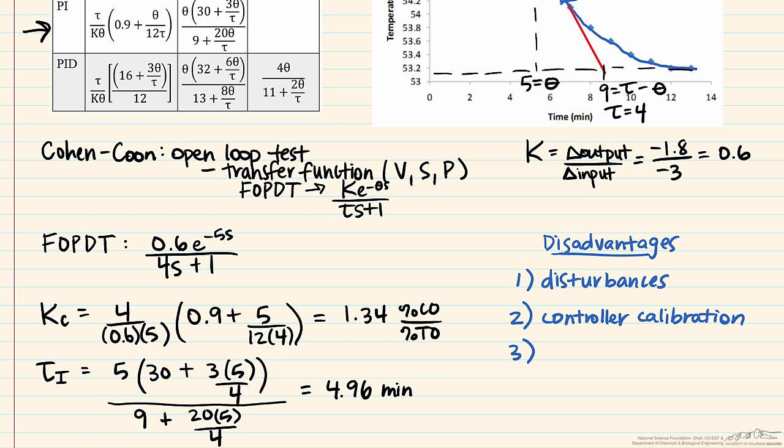Another potential issue is the fact that if any of these things are significantly non-linear, and somewhat related is the fact that if the process doesn't represent a first order plus dead time. So if any of these issues happen that can influence the accuracy of the results that you get.